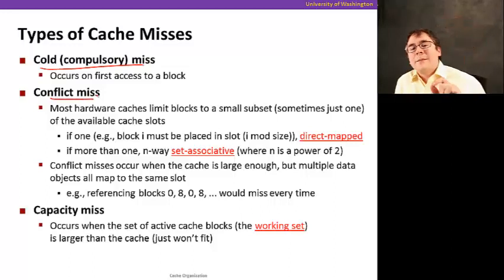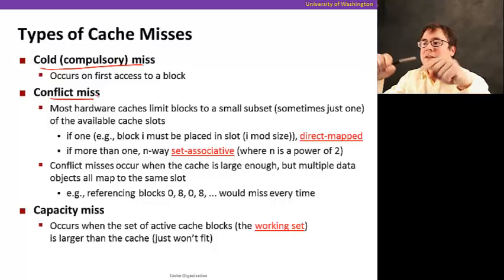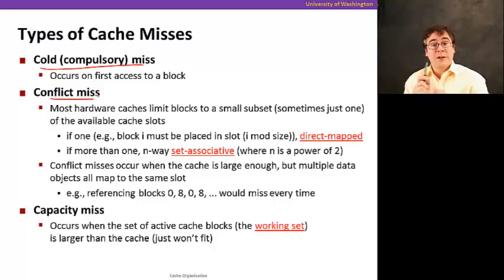A conflict miss is a miss that happens just because of the cache organization. When you have multiple addresses that map into the same set, one could kick the other one out. When that happens, you're during conflict. Conflict is normally not a good thing. And in the case of caches here, they're just kicking each other out. That's going to reduce the effectiveness of your cache.